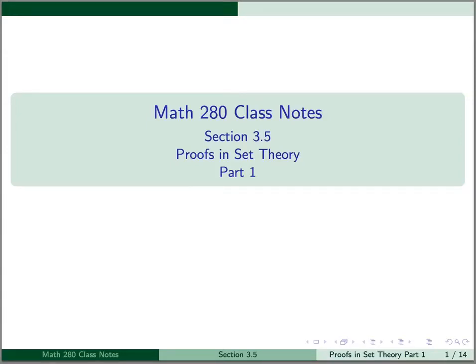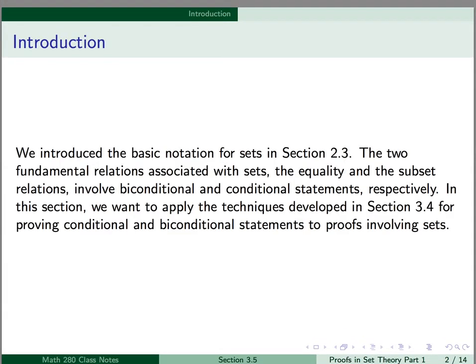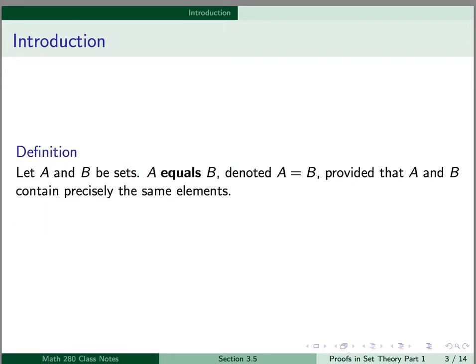This video covers the first part of Section 3.5, Proofs in Set Theory. We introduced the basic notation for sets in Section 2.3. The two fundamental relations associated with sets — the equality and the subset relations — involve biconditional and conditional statements, respectively. In this section, we want to apply the techniques developed in Section 3.4 for proving conditional and biconditional statements to proofs involving sets. We'll start by reviewing the definitions.